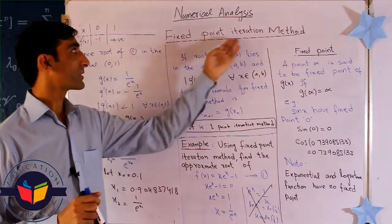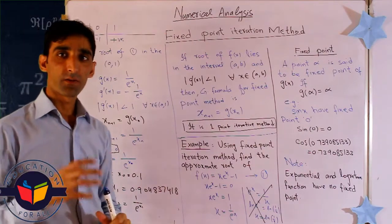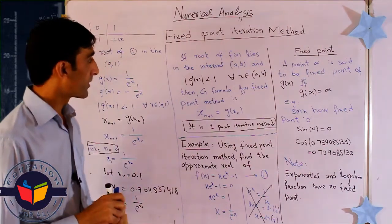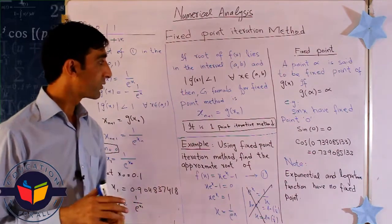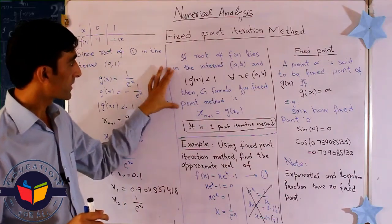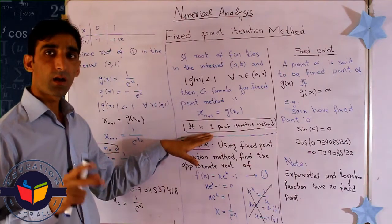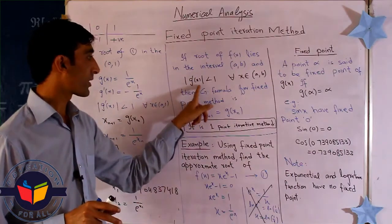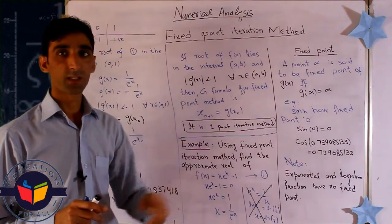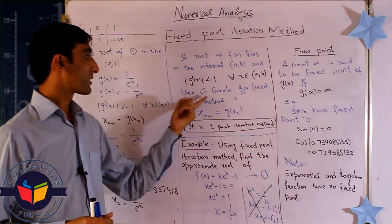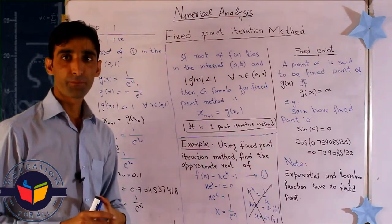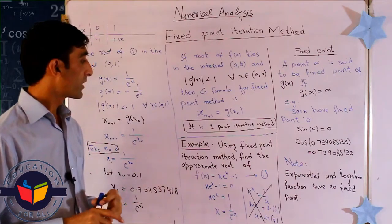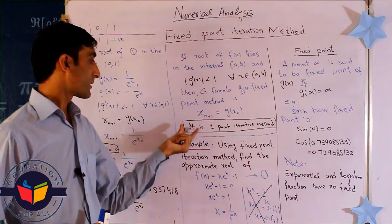Now let's move on to the fixed point iterative method. Before taking an example, we review a few approximation rules. If the root of f(x) lies in an interval [a, b] and g'(x) is less than 1 for all x in [a, b], then the general formula for the fixed point method applies.